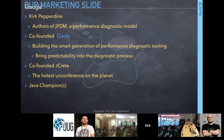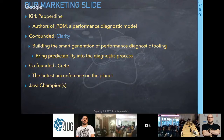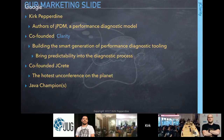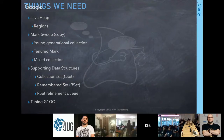Kirk co-founded JClarity, which is building the next generation of performance diagnostic tooling — scalable, predictable, and suitable for production environments. He also co-founded JCrete (though many think Heinz founded it). Returning to the real content: G1 is a regional collector that partitions the heap differently than traditional collectors.